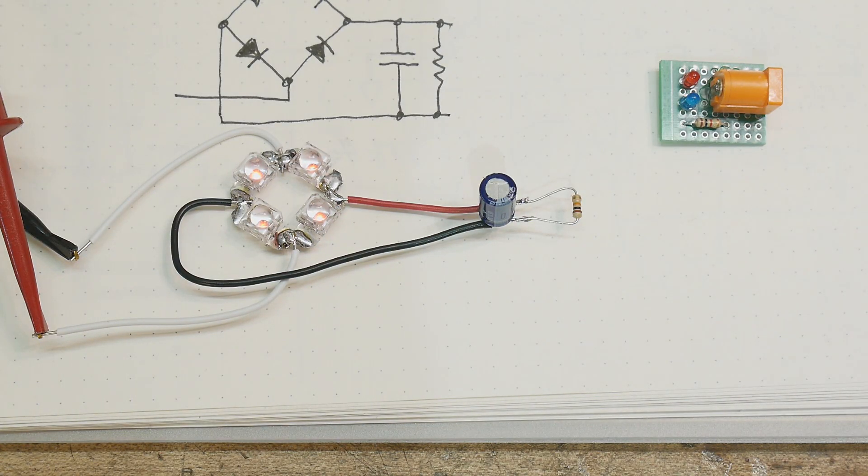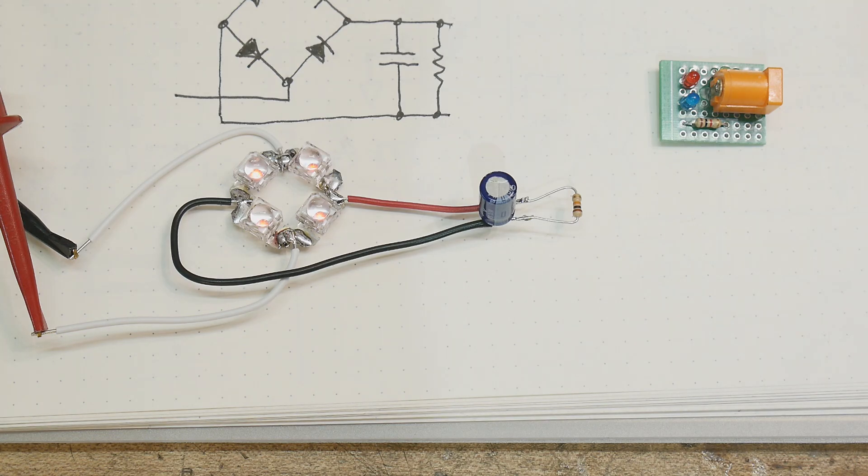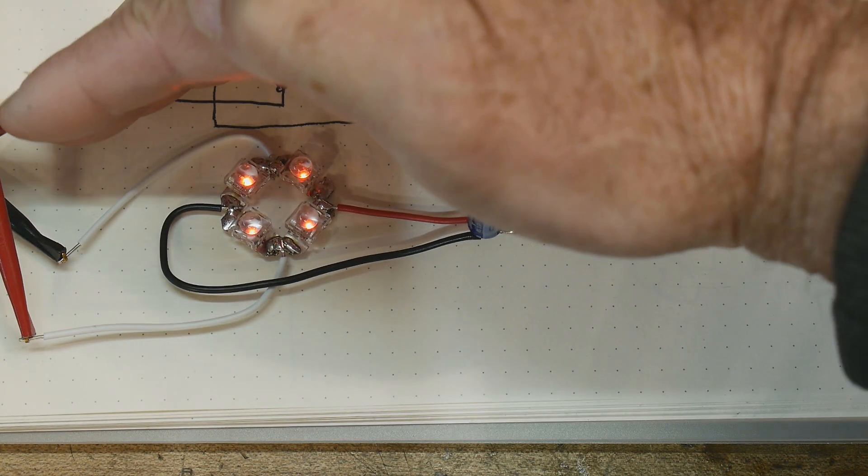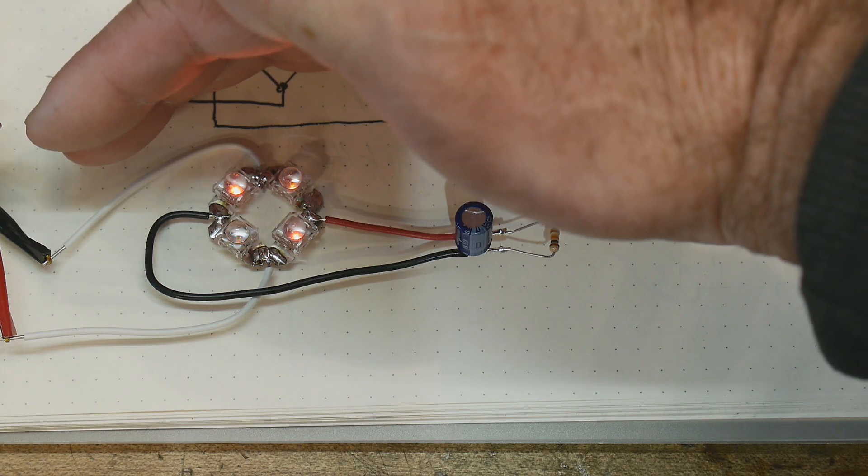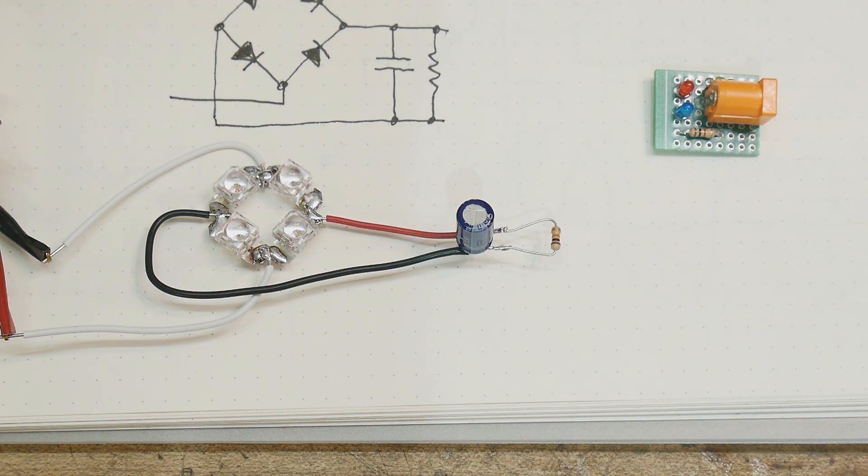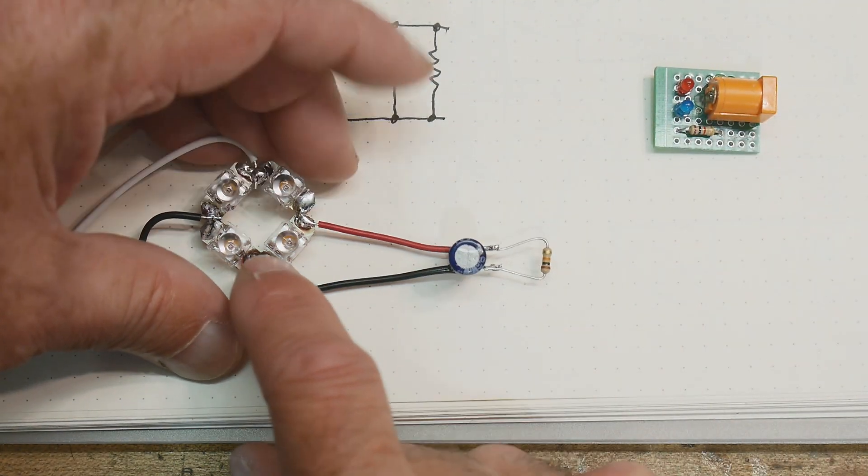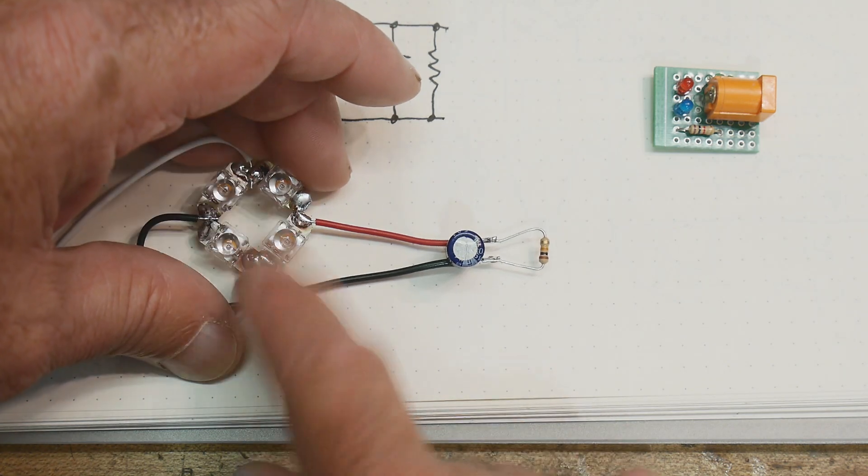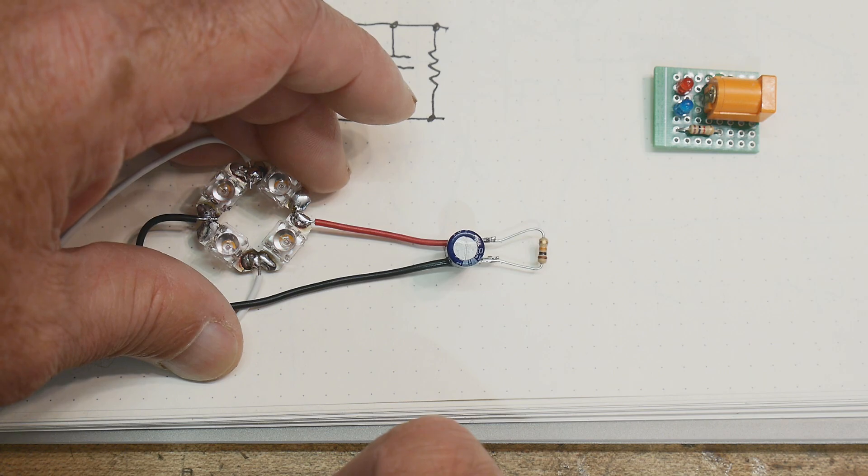But, you know, flicker is flicker. So, let me reduce the frequency. Now, I can see that. Does the camera pick that up? Yeah, the camera's picking that up, I think. So, it's starting to flicker. It's at 25 hertz now. And let me take it all the way down to 1 hertz. So, we have 1 hertz AC. And you can see that sometimes we're using these two diodes, and sometimes we're using those two diodes.